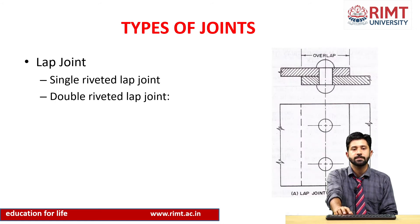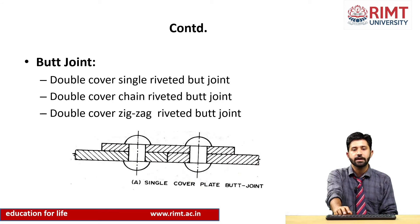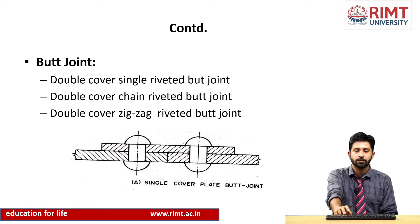We have two main types of joints: lap joint and butt joint. In a lap joint, two plates overlap each other; we have single riveted and double riveted lap joints depending on the number of rivets used. In a butt joint, two plates are connected side by side without overlapping, using cover plates. A single cover plate butt joint uses one cover plate above or below, while a double cover butt joint uses plates on both sides.